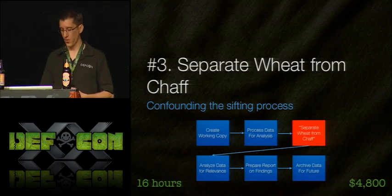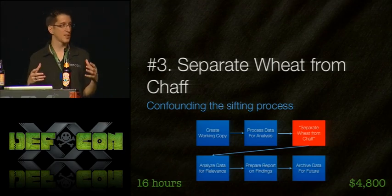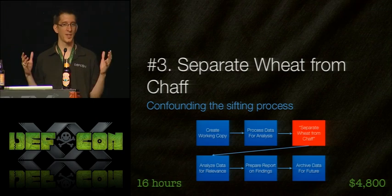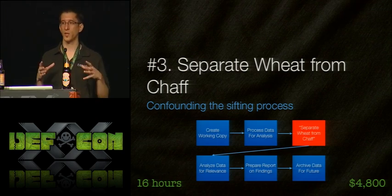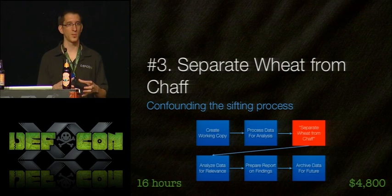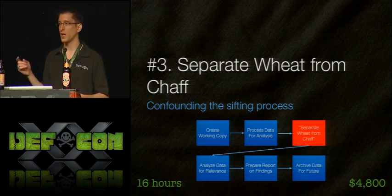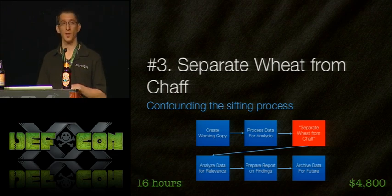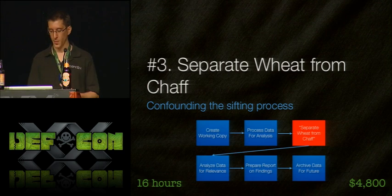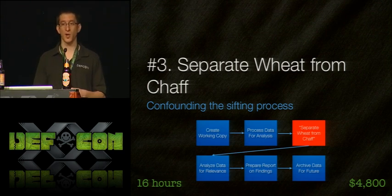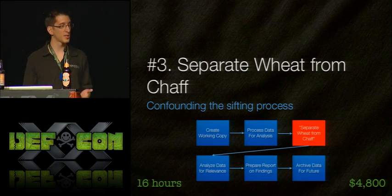We're now on the third stage — separating the wheat from the chaff — the process where data is whittled down to a manageable volume so the investigator only looks at the relevant files. Some techniques involve date filtering, filtering by all files created within a certain date range, or by custodian — all files created by a specific user ID. There are a variety of other filtering techniques as well.